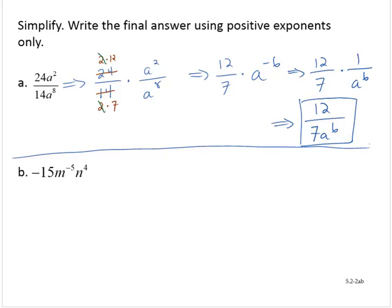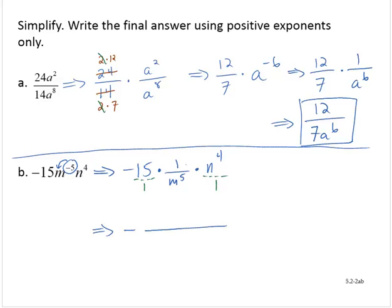Exercise B: we have negative 15, m to the negative fifth, n to the fourth. We see this negative exponent — it doesn't have any parentheses, so it applies only to the m, not to the negative 15. So I can think of this as negative 15 times 1 over m to the fifth, times n to the fourth. Multiplying the fractions gives me negative 15n to the fourth in the numerator and m to the fifth in the denominator.